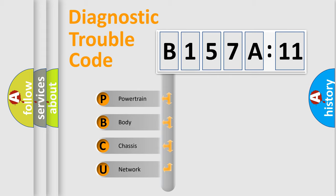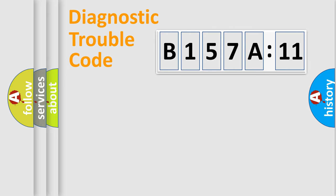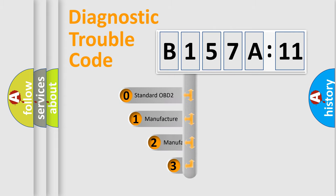We divide the electric system of automobile into four basic units: Powertrain, Body, Chassis, and Network. This distribution is defined in the first character code.